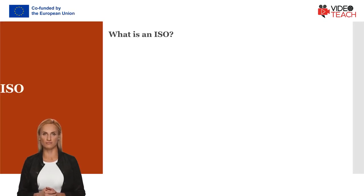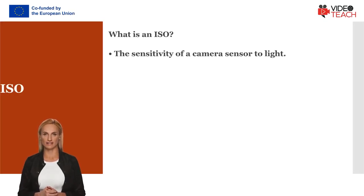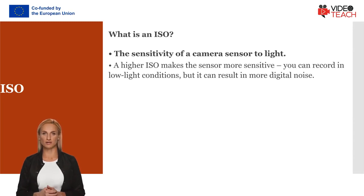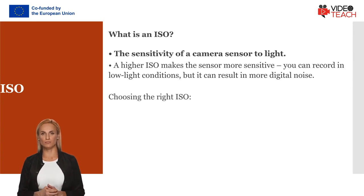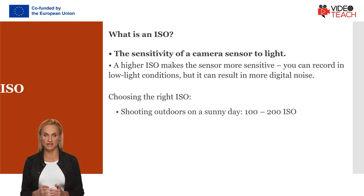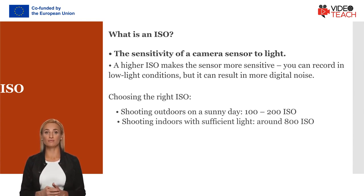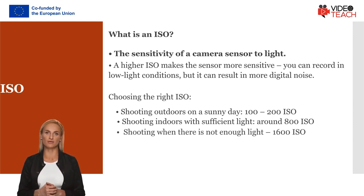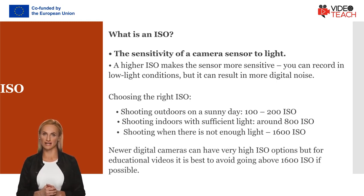ISO is the sensitivity of a camera sensor to light. A higher ISO makes the sensor more sensitive so you can record in low-light conditions, but it can result in more digital noise. Choosing the right ISO depends on the light of the location. Shooting outdoors on a sunny day, an ISO of 100 to 200 might be enough. Shooting indoors with sufficient light would require ISO of around 800. However, shooting when there is not enough light, you will need to go as high as 1600 ISO. For educational videos, it is best to avoid going above 1600 ISO if possible.